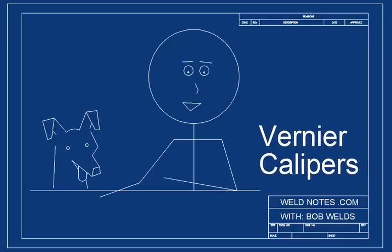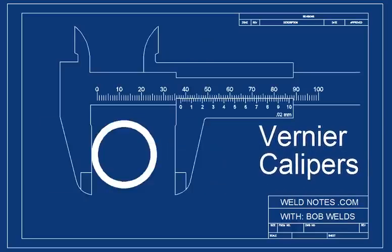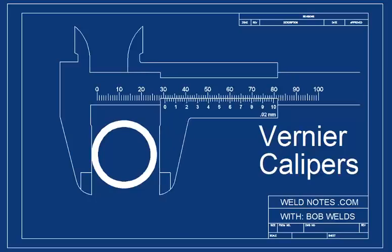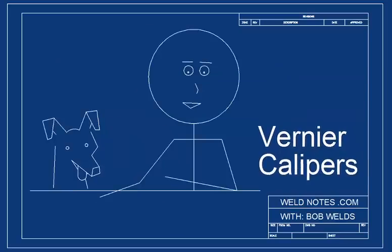Hi, I'm Bob Welds and this is how to read a metric vernier caliper. There are different kinds of vernier scales designed to do different jobs, but they all work pretty much the same way.